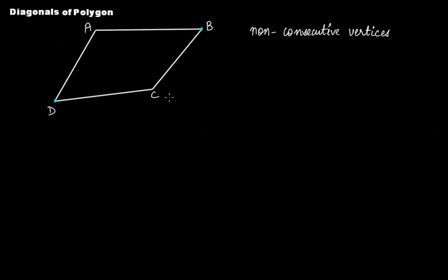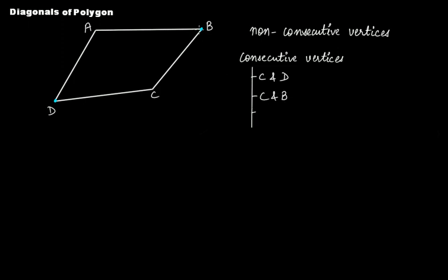C and D are consecutive vertices. If we name the consecutive vertices: C and D, C and B, B and A, and A and D — these are consecutive vertices. D and B are non-consecutive vertices, and similarly A and C are non-consecutive vertices.